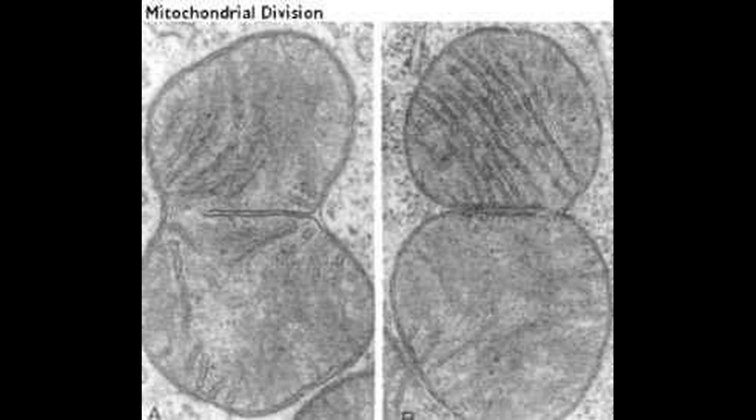It should also be mentioned that the mitochondria and plastids of eukaryotes also divide like they are their own cells. However, while eukaryotes divide via mitosis or meiosis, these organelles divide like bacteria via binary fission. In hindsight, this isn't surprising, since it is now widely accepted that these organelles originated from bacteria via endosymbiosis.